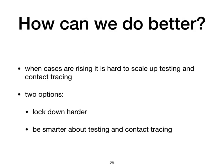So how could we do better? When cases are rising, it's hard to scale up testing and contact tracing. The two options are: lockdown harder, or be smarter about testing and contact tracing. The latter is the best idea, but time is running out.